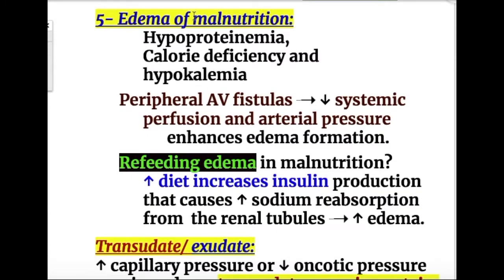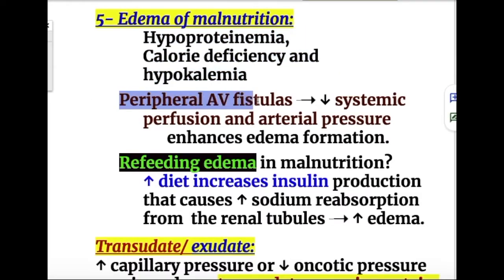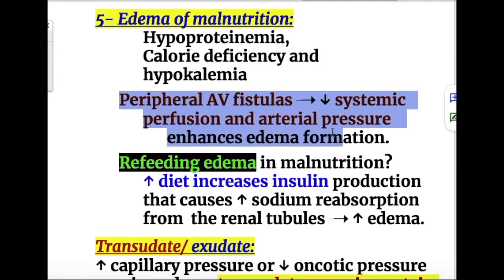Number five is edema of malnutrition, with hypoproteinemia, caloric deficiency, and hypokalemia — protein-calorie malnutrition. Peripheral AV fistula formation occurs, leading to decreased systemic perfusion and arterial pressure, which increases edema formation.